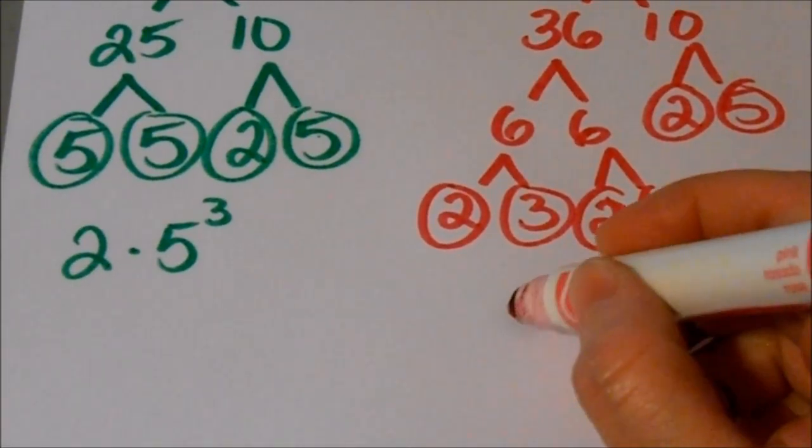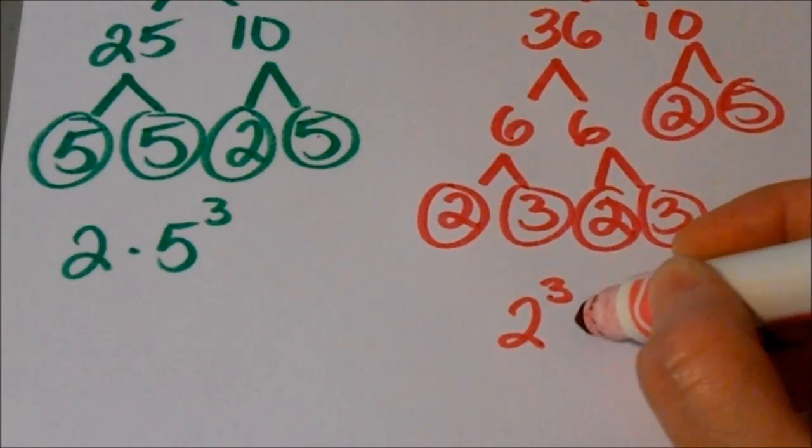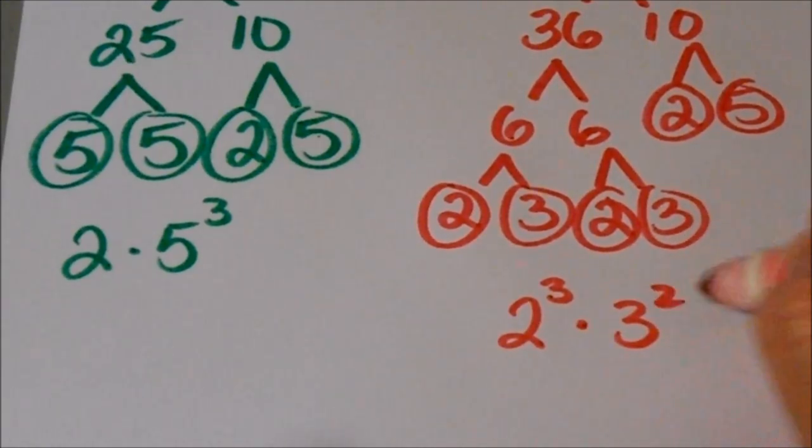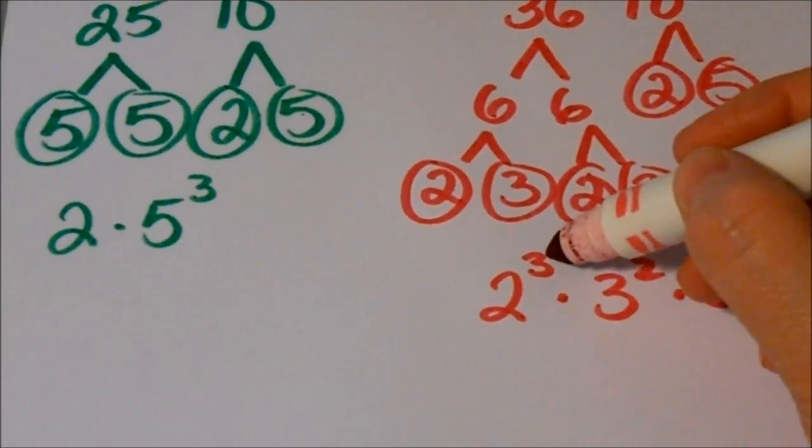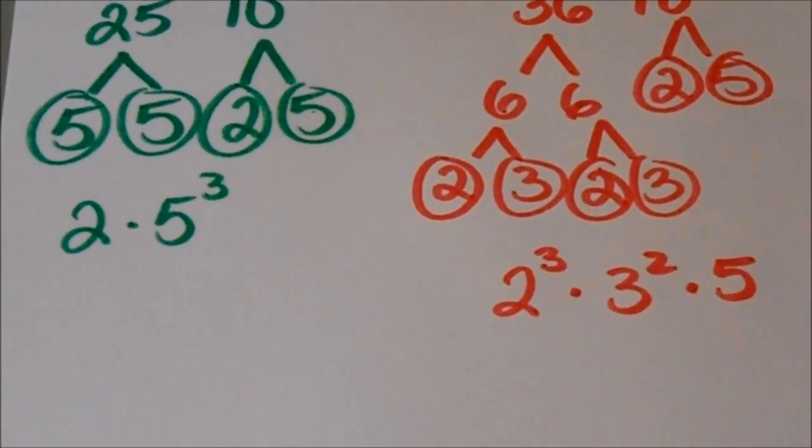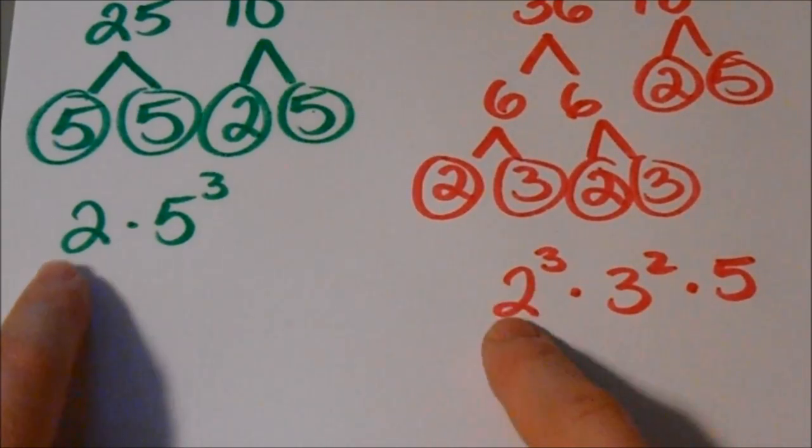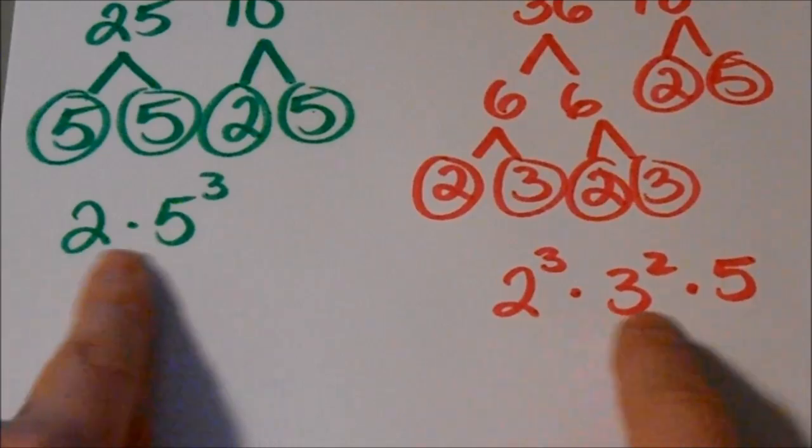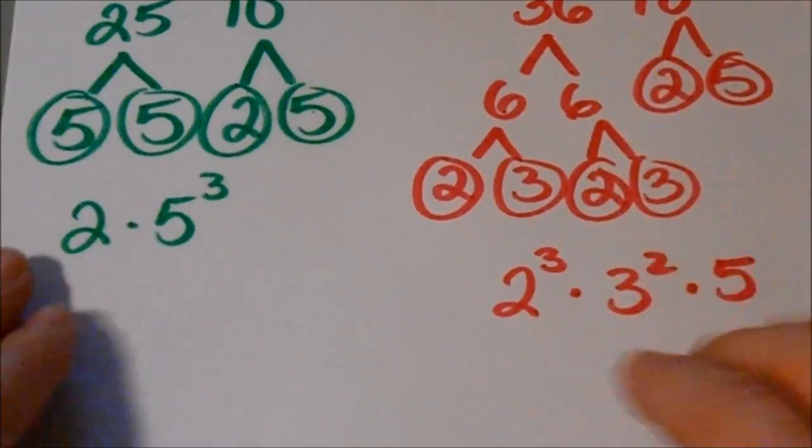Let me write this. I find it helpful to write my prime numbers with exponents. It just makes it a little bit easier because you want to look at the base numbers in each of your two numbers that you factored out.